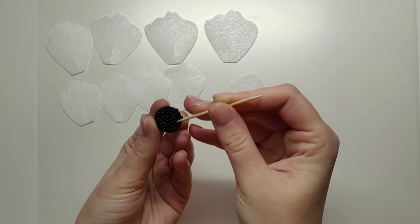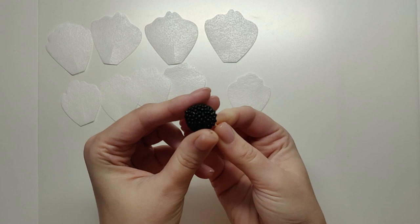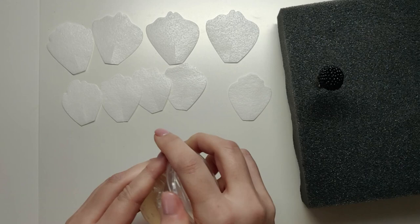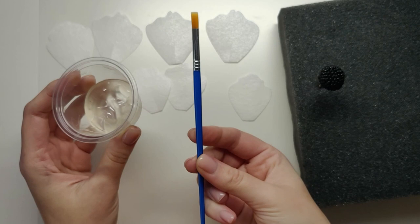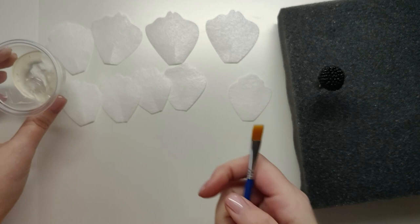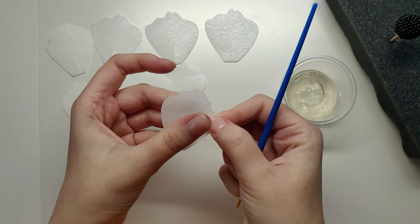To glue my petals I'm going to use piping gel. If you don't have piping gel you can use corn syrup or even a little bit of water, but I prefer to use piping gel because it's thick and it makes working with wafer paper very easy.